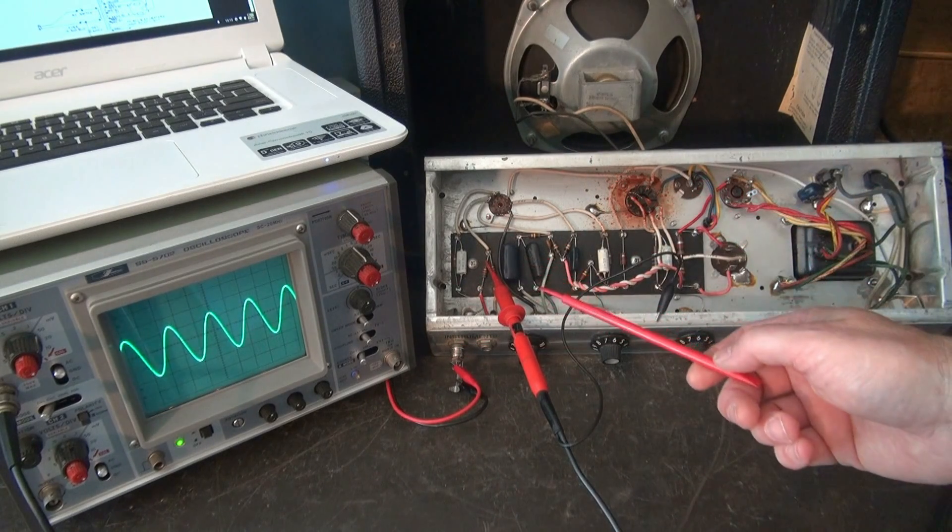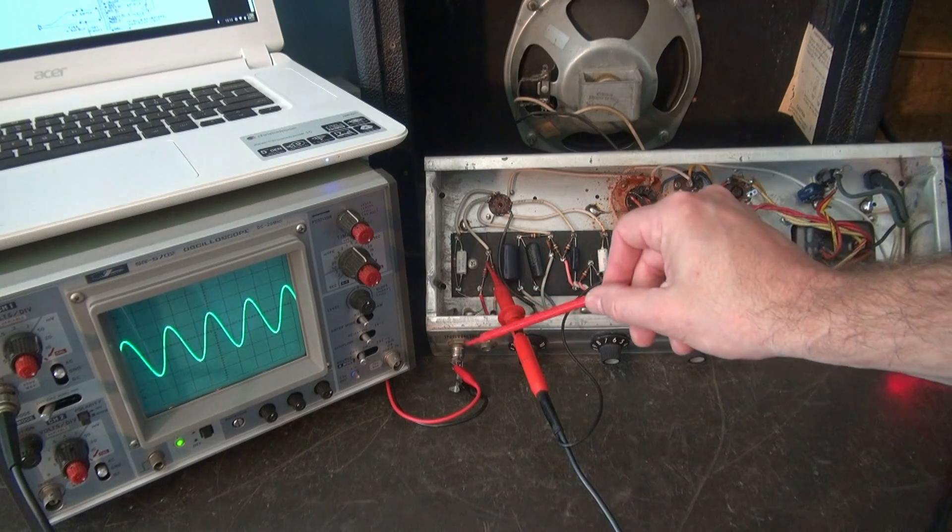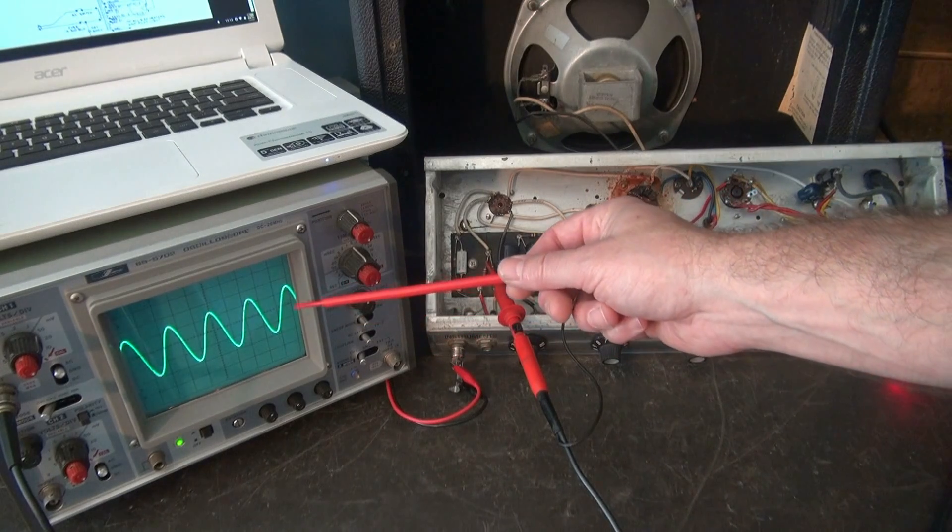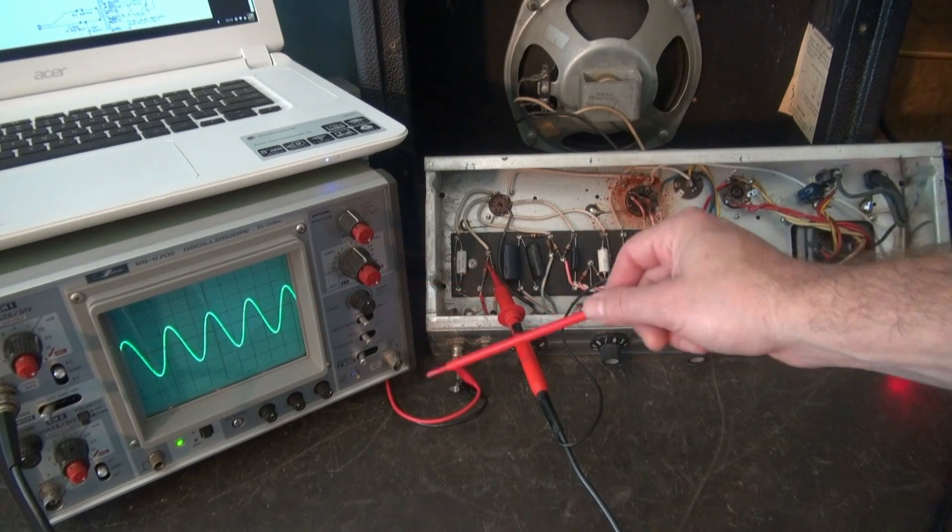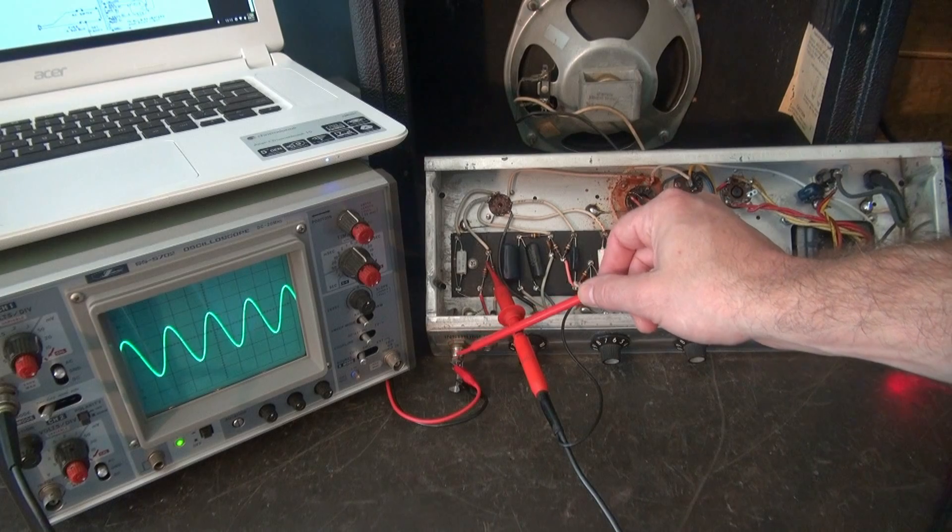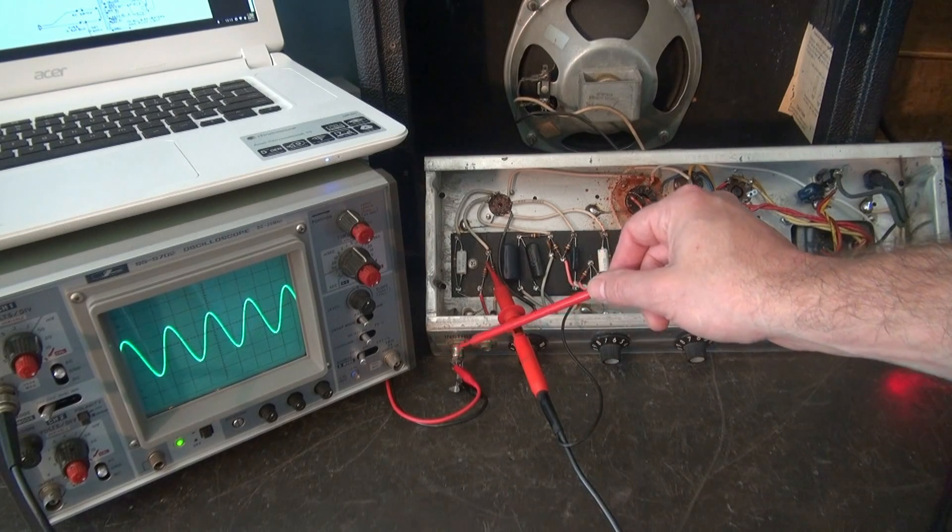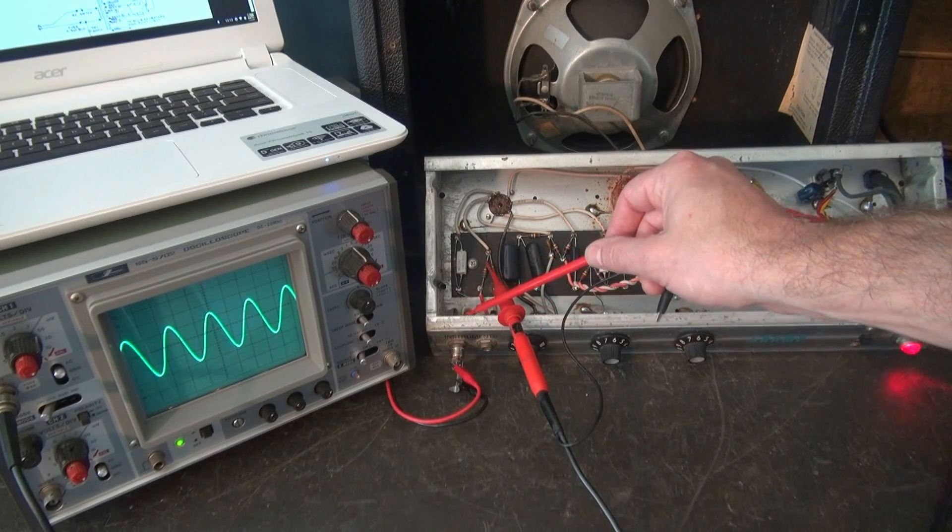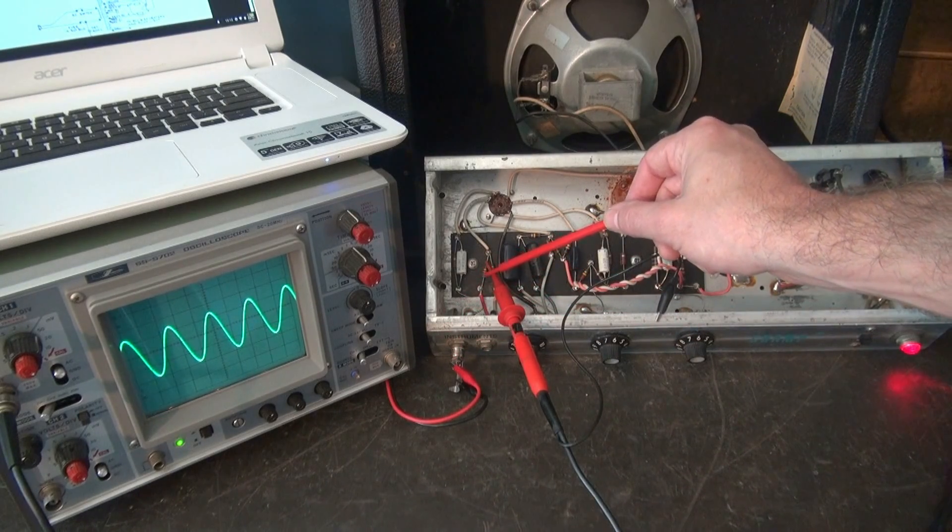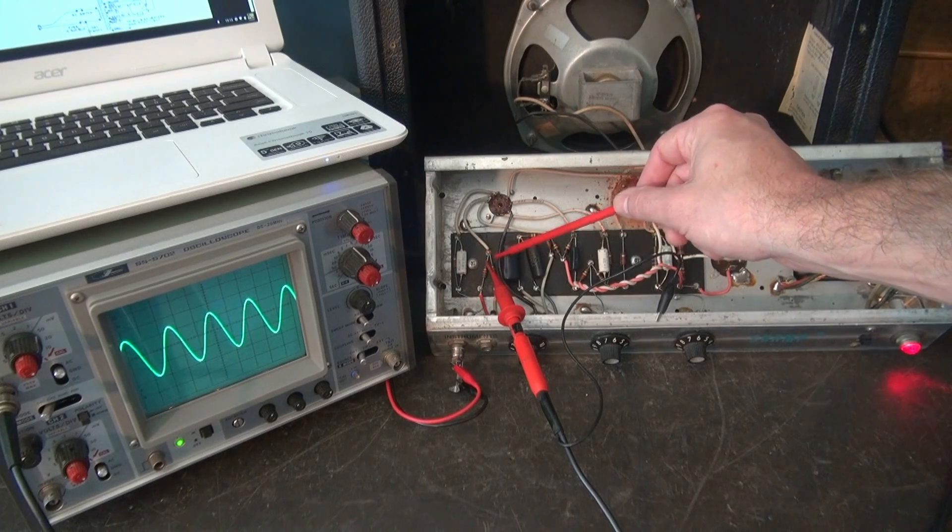So we're going to go section by section. So right now, as I showed you before, we have a 150 millivolt signal coming into the quarter inch jack, which is where your guitar would plug in. It makes its way through the jack, and then it's going to go to the 68K resistor. And that's where I've got the scope. And look, there's the signal.